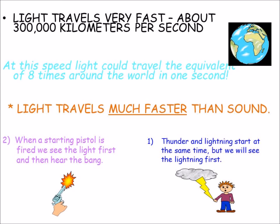Light travels much faster than sound. That's why, for example, when a pistol is fired, we see the light first and then we hear the bang. The same with thunder and lightning — thunder and lightning start at the same time, but we see the lightning first and then we hear the thunder.